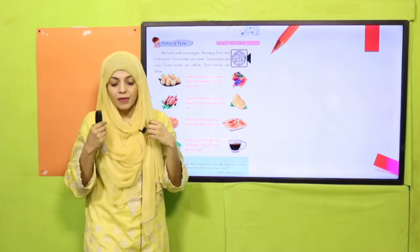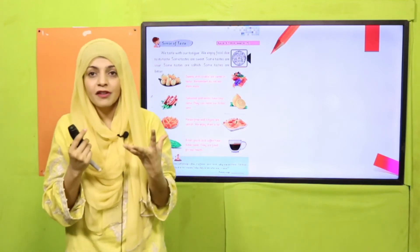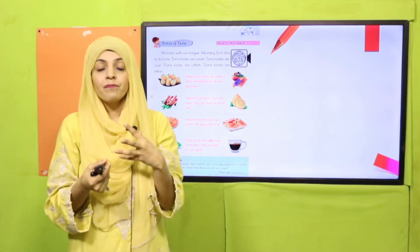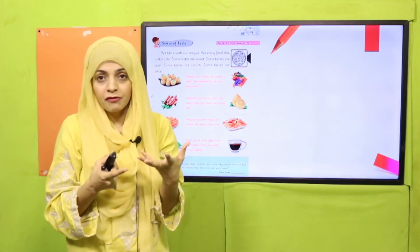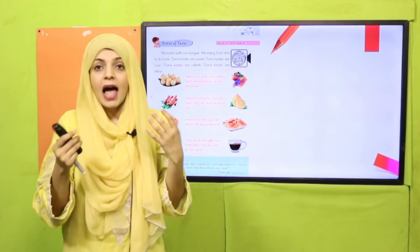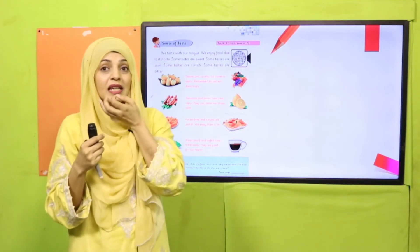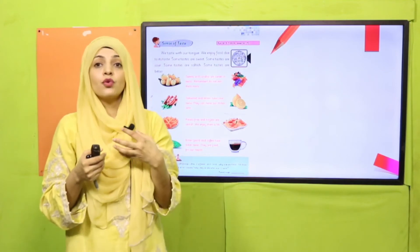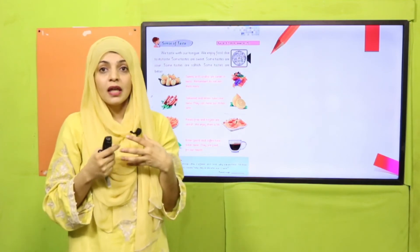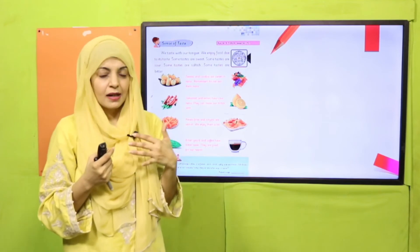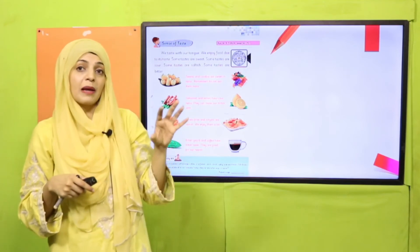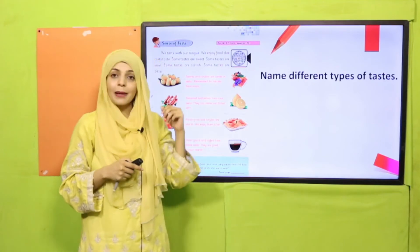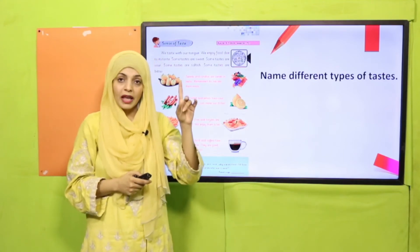Let's quickly revise the different types of taste. If you eat candy, how does it feel? — Sweet. If you eat biryani, how does it feel? — Salty. If you try to eat a lemon, how does it feel? — Sour. And if you drink coffee, that is bitter. So these are the different types of tastes.